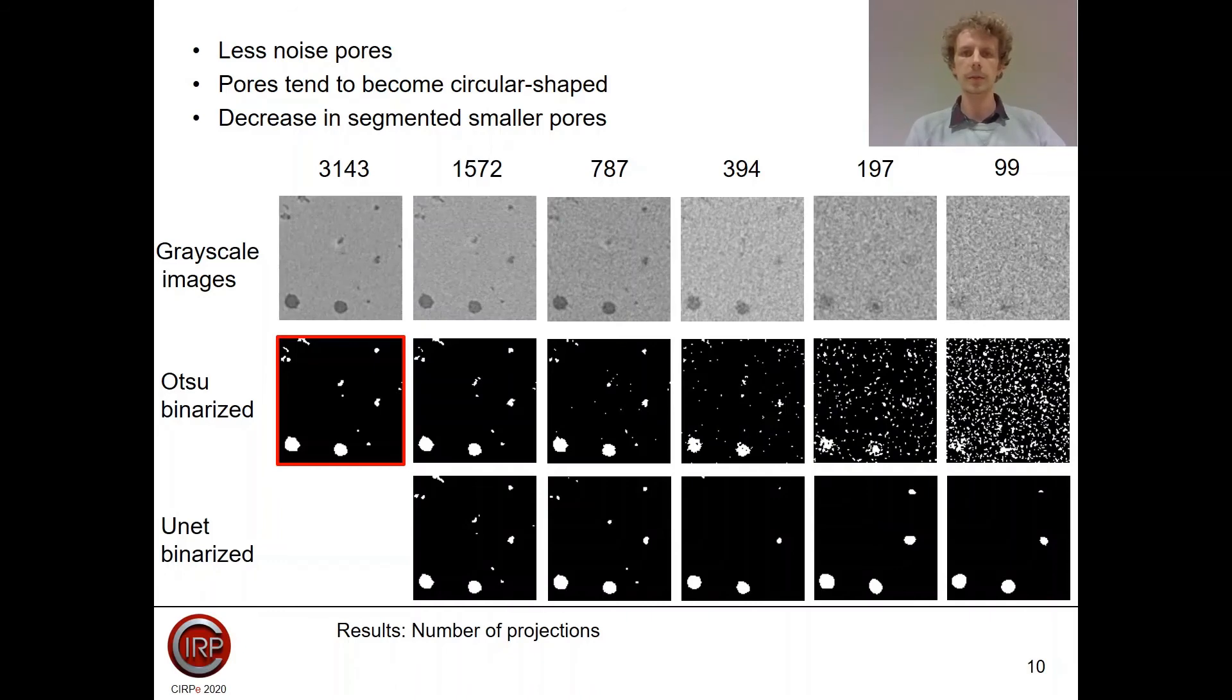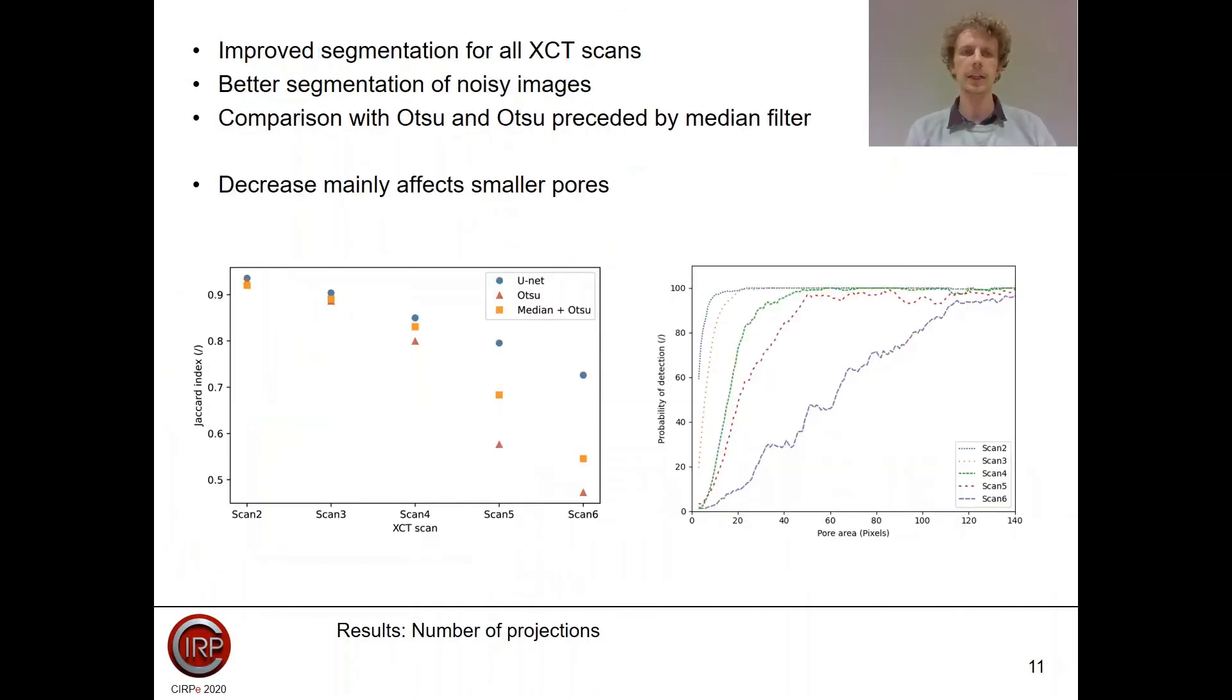To make it a bit more quantitative, we calculated the Jaccard index for all the different low-quality scans and compared them with the OTSU threshold segmentation algorithm. What we see is that there is an increase in the quality of the segmentation compared to OTSU and compared to OTSU preceded by a median filter. From the figure at the right, we can conclude that if we decrease the number of projections, smaller pores are less likely to be detected.